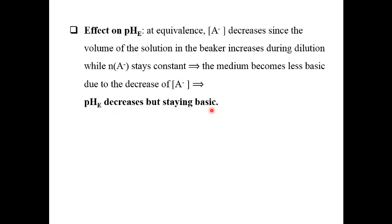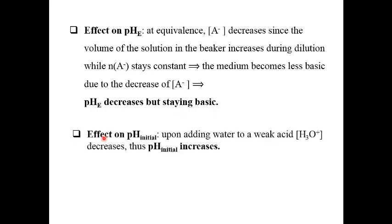This is the case of a weak acid from which a conjugate base is derived. So pH equivalence decreases, but it stays basic. In the case of strong acid–strong base titration, pH stays at 7 and nothing changes.